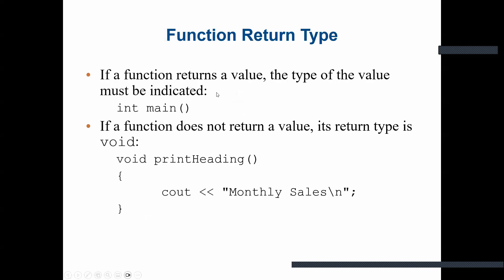If a function returns a value, the type of that value must be indicated. For the main function, the return type is int and it returns zero. If a function does not return a value, its return type will be void. For example, a function named printHeading has a return type of void, and its body prints monthly sales — there is no returning value, so it is void.